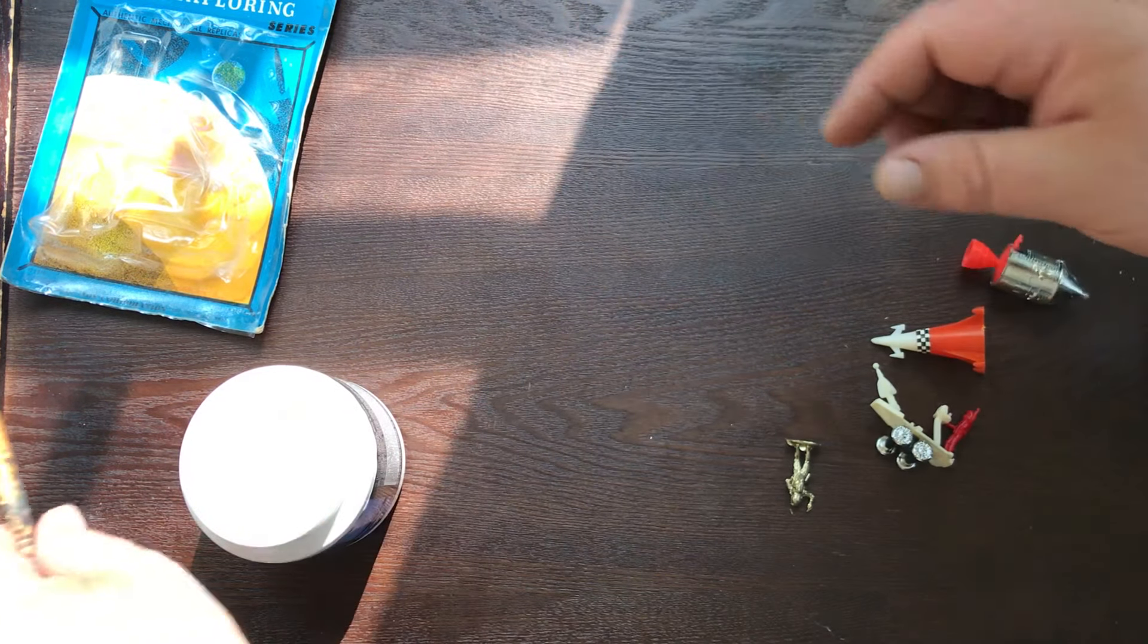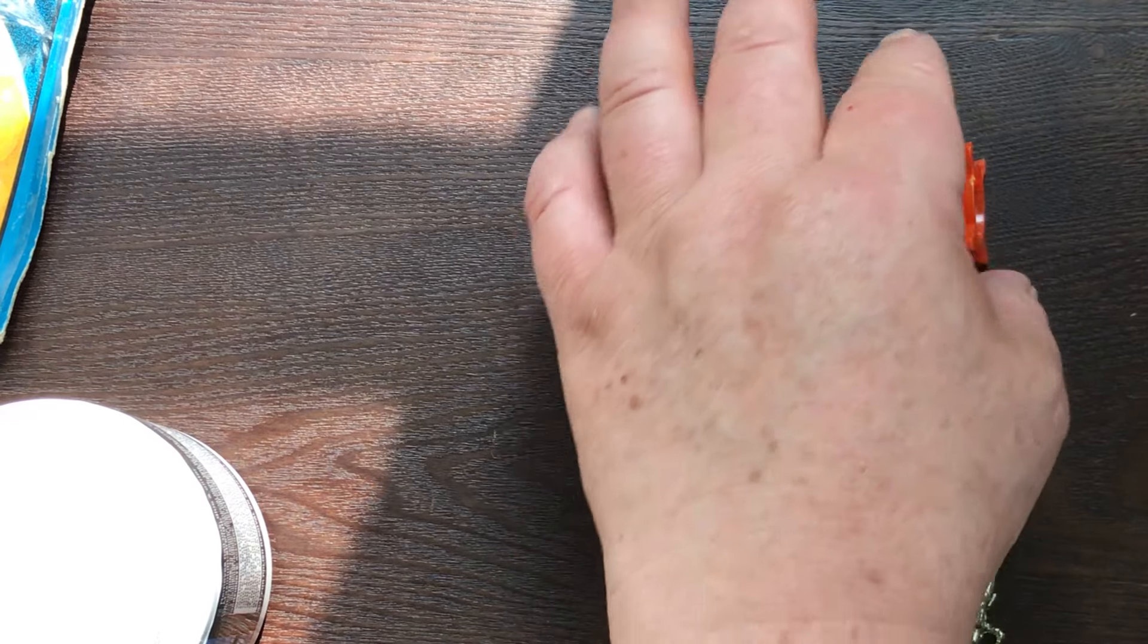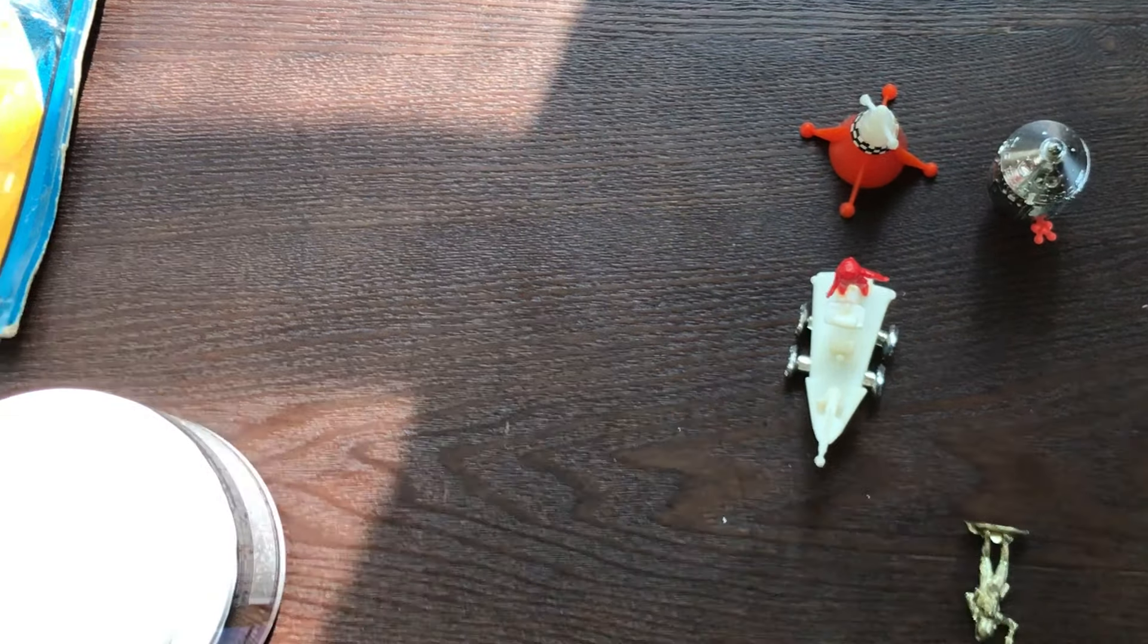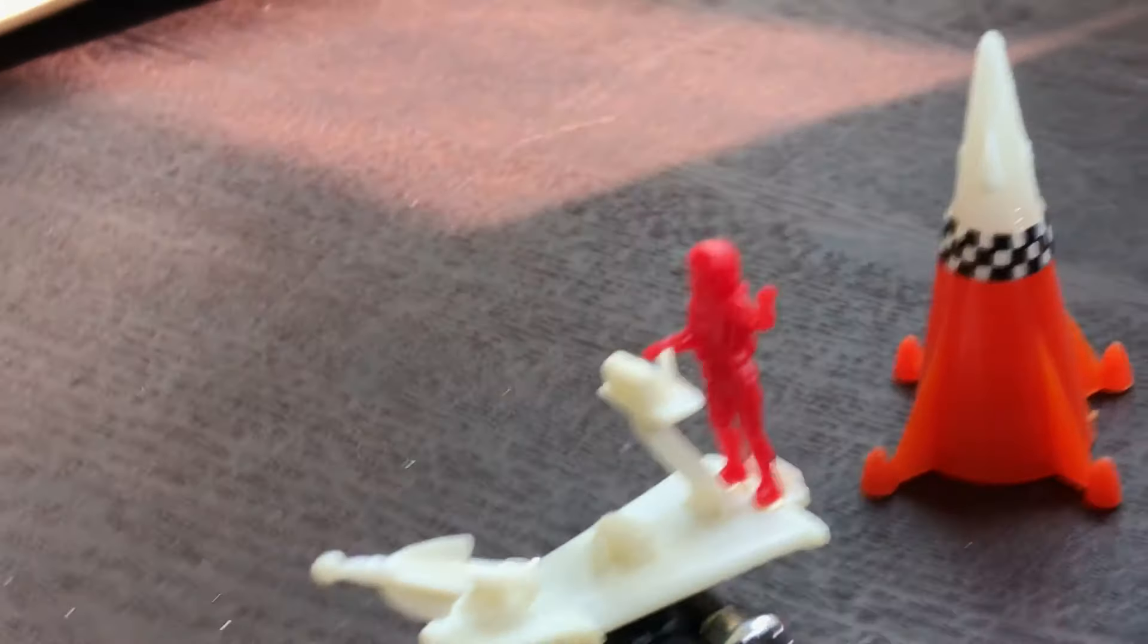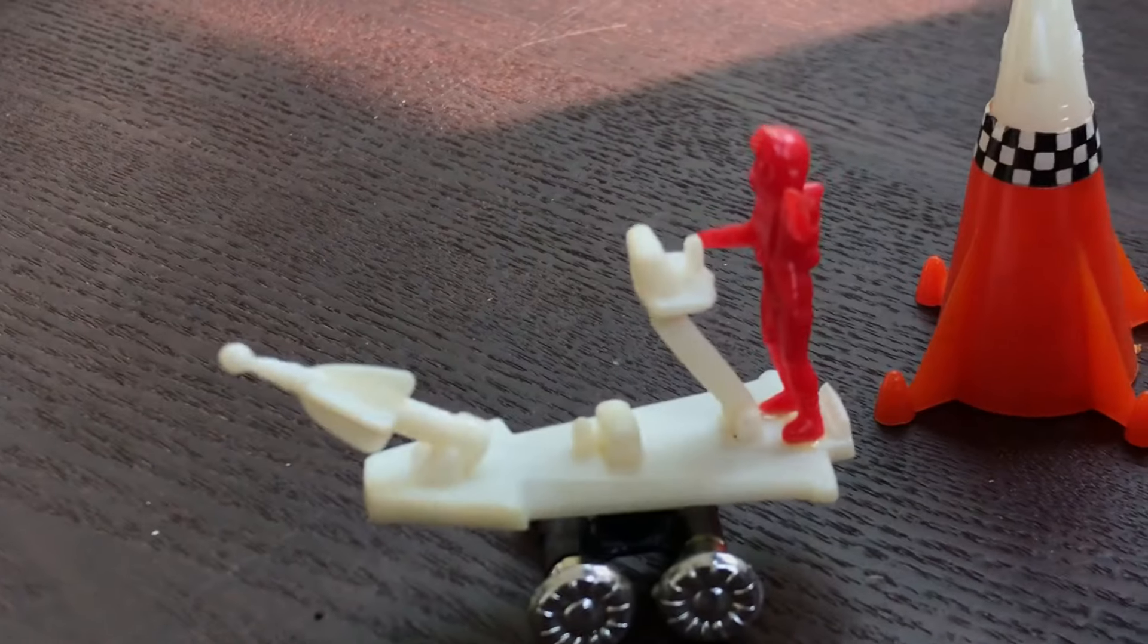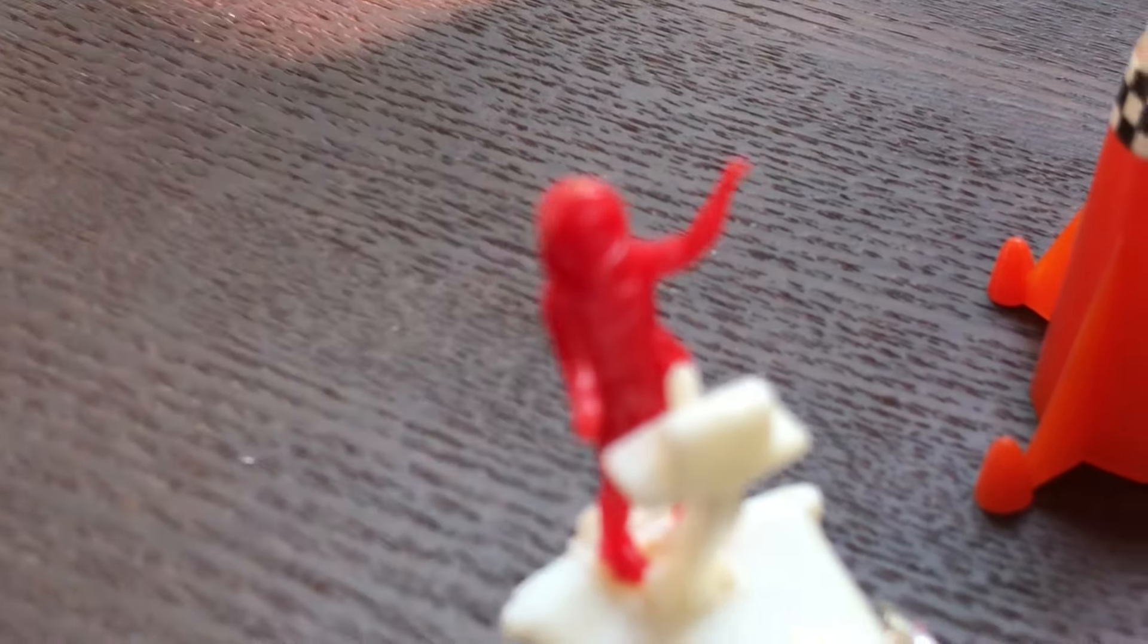And we'll set this off to the side and instead check out what came in the set. The standout piece is the Major Matt Mason. I've been referring to this as a laser cannon. And it's actually a rocket launching sled. I can't do anything right.